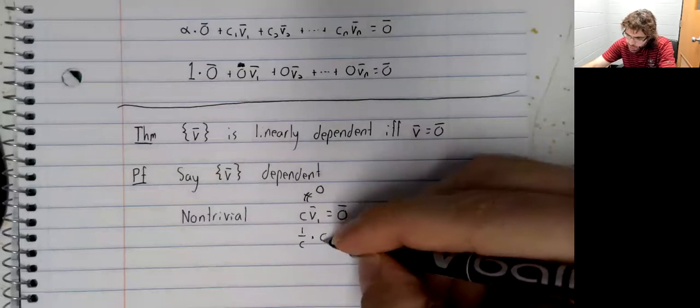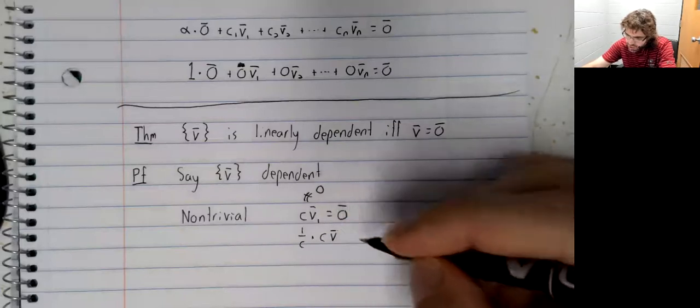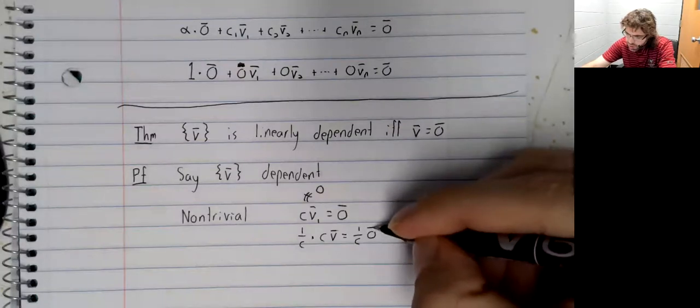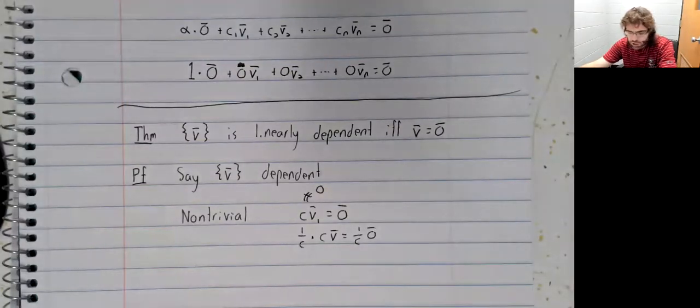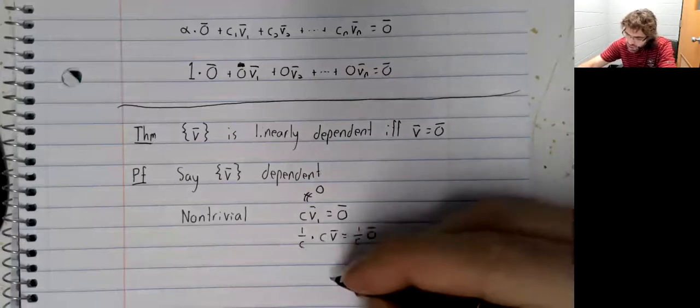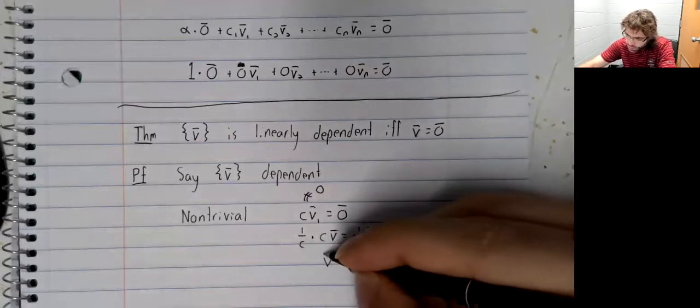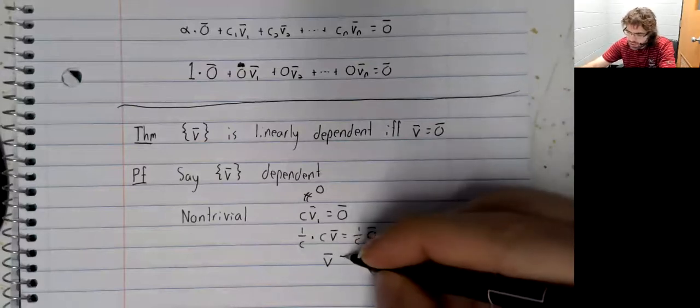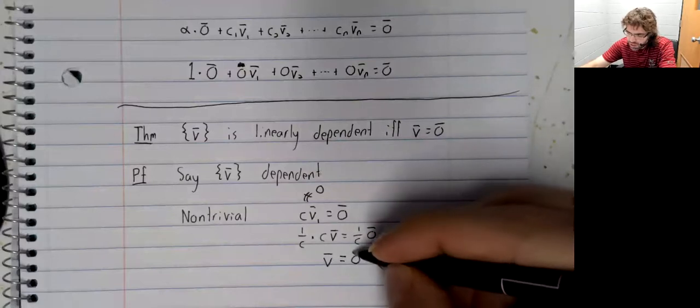we can perform a scalar multiplication by its reciprocal. This one over c and this c cancels. One over c times the zero vector is still the zero vector.